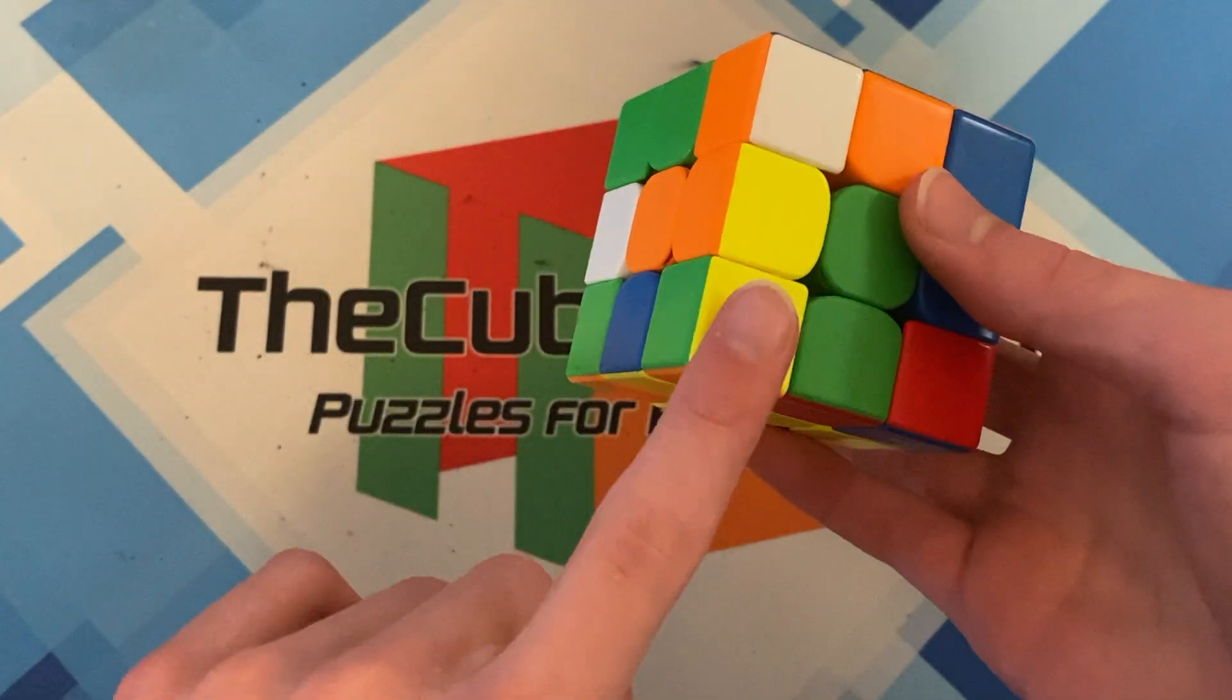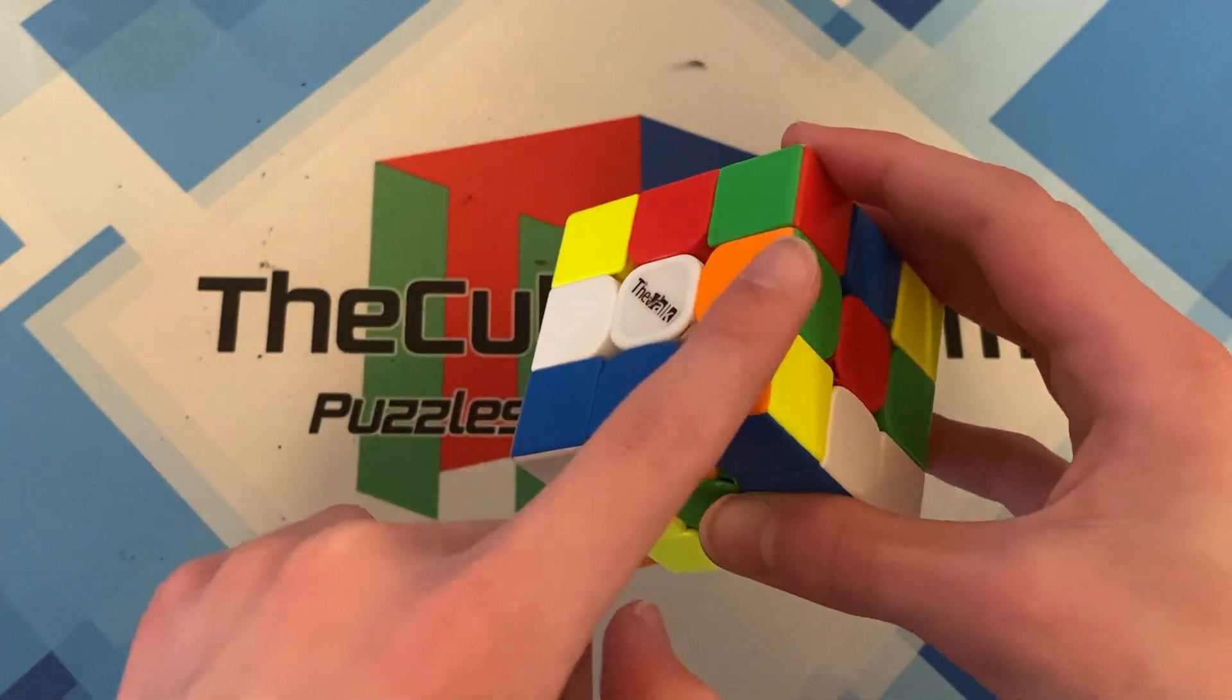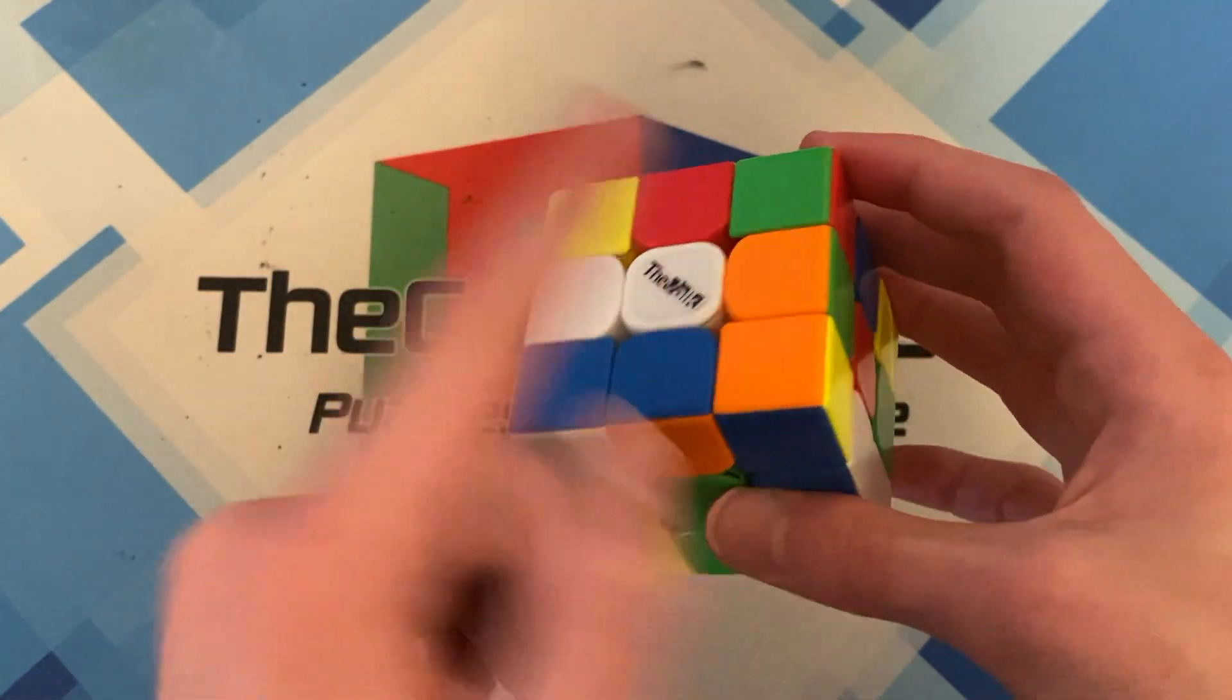And when I solve cross, this corner is going to be right here. And I also noticed that if I move this edge to right here, I'll have a free pair.